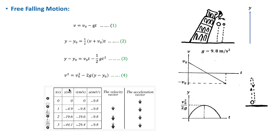The table here shows the displacement, velocity, and acceleration of an object dropped from rest. Initially the velocity is zero, then it starts to increase steadily with time by 9.8 meters per second each second. So at t = 1 s the velocity is −9.8 m/s, at t = 2 s it is −19.6 m/s.